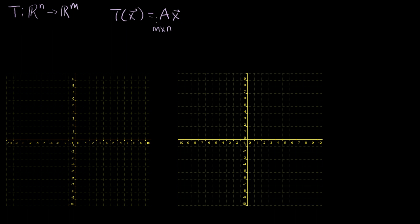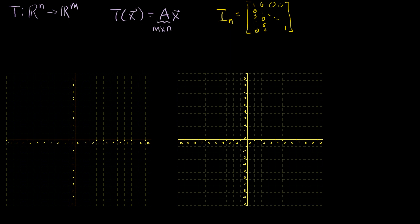We know that we can always construct this matrix — that any linear transformation can be represented by a matrix this way. We can represent it by taking our identity matrix with n rows and n columns. So it literally just looks like this: it's a 1, then n minus 1 zeros all the way down, then 0, 1, and everything else is zeros. You just have 1s down the diagonal. It's an n by n matrix with all zeros elsewhere.